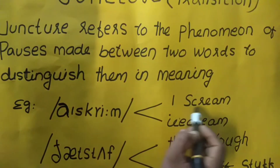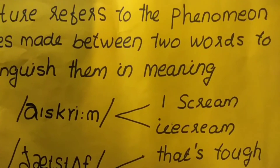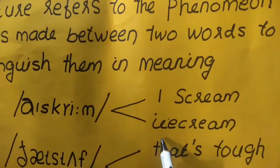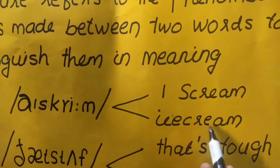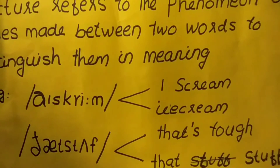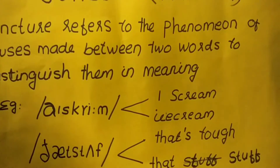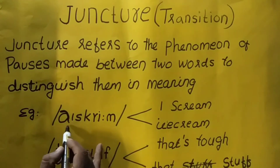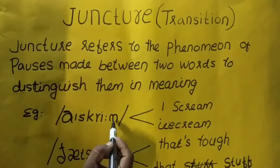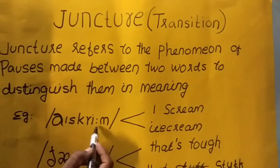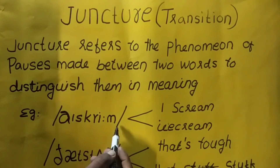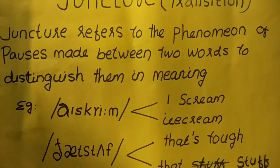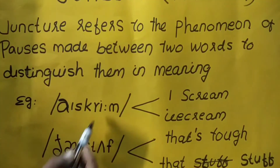For example, 'ice cream' and 'I scream.' In transcription, 'ice cream' looks different from 'I scream.' We have to look at the transcription carefully to see the difference. That is why we say 'ice cream' versus 'I scream' — the juncture or pause distinguishes the meaning between the two.